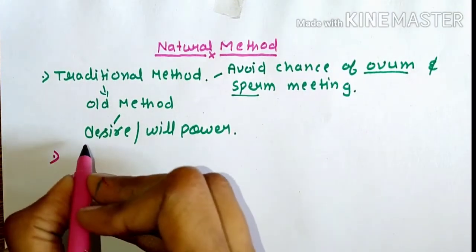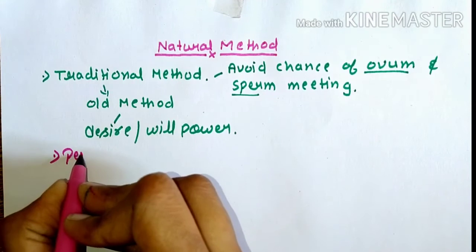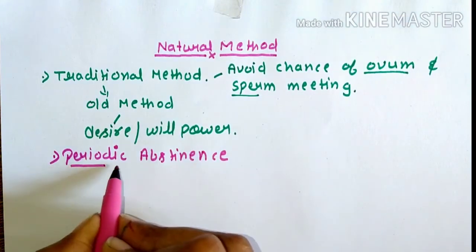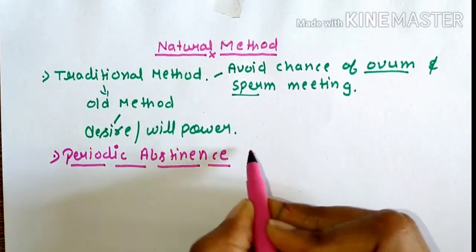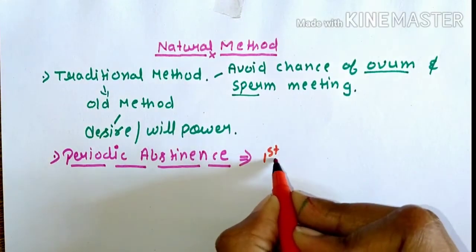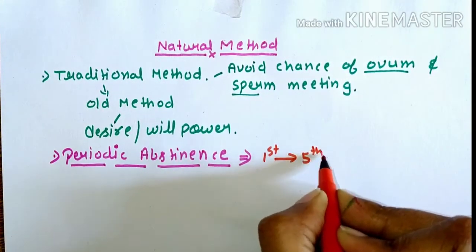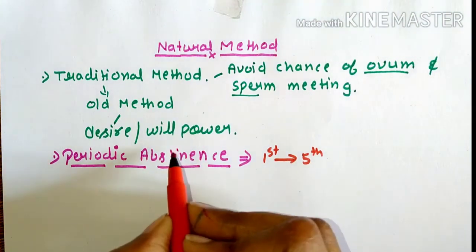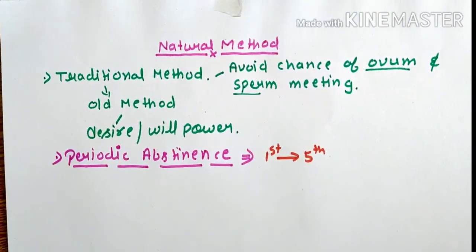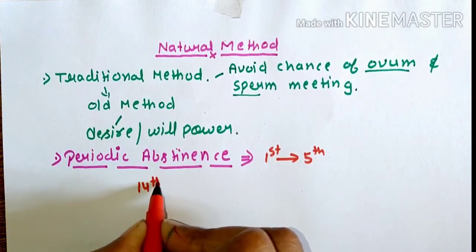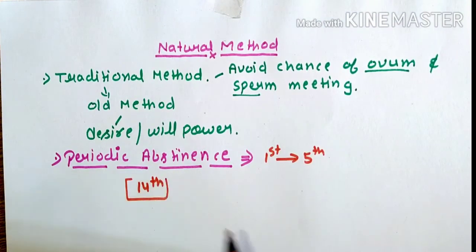The first sub-method is periodic abstinence. In the menstrual cycle, from day 1 to day 5, females have menstruation. During this time, there is no chance of pregnancy. We know that ovulation mostly occurs around day 14, which is the most likely day for ovulation.